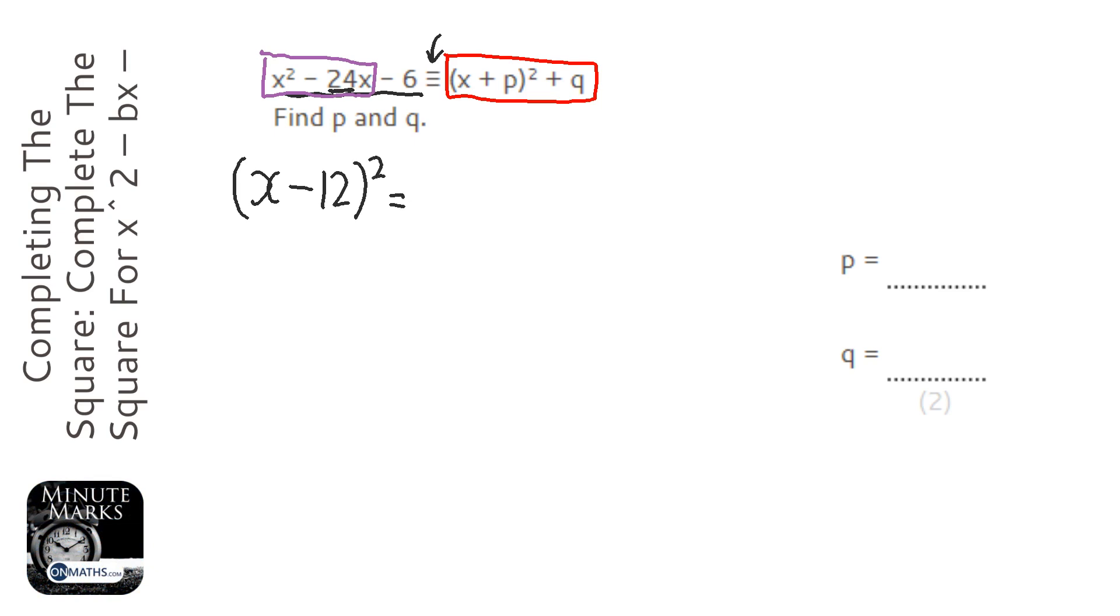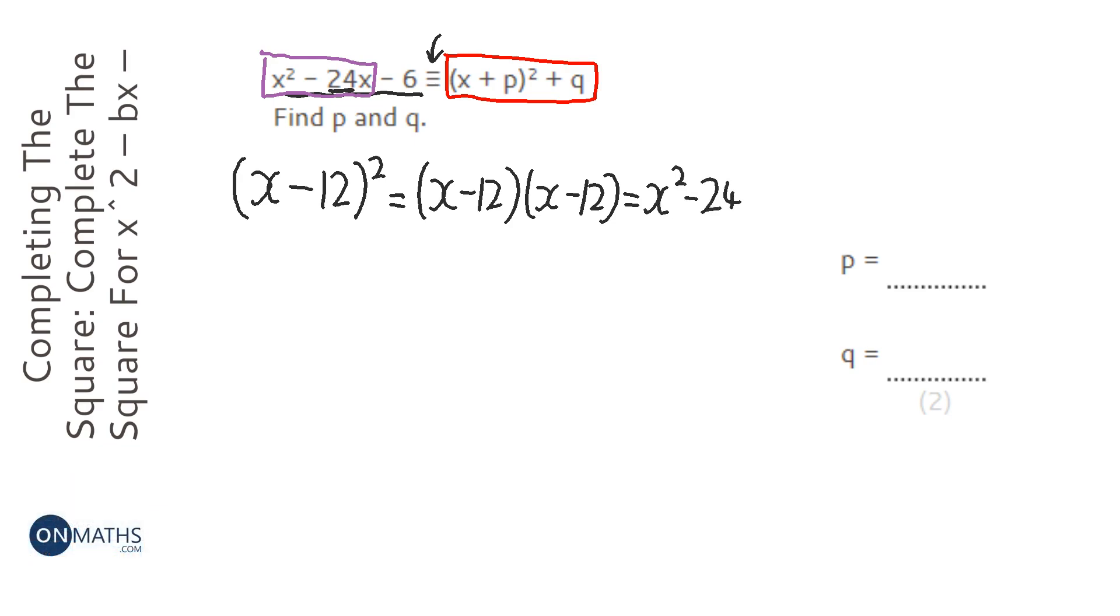Now if I expand that and just think, right, that's going to be the same as x minus 12, x minus 12. And so that's going to be x squared, minus 12x minus 12x, so that's minus 24x. So so far so good, because that's what it says in the question.